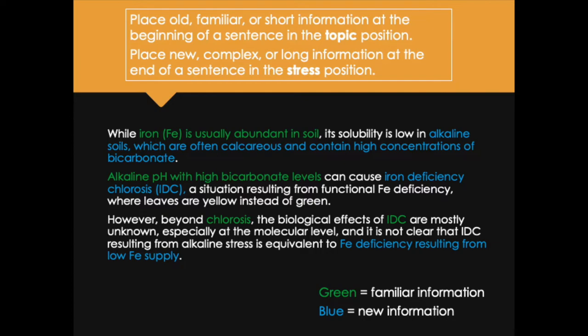The second sentence reads: 'Alkaline pH with high bicarbonate levels can cause iron deficiency chlorosis, a situation resulting from functional iron deficiency where leaves are yellow instead of green.' This introduces the new concept of iron deficiency chlorosis, which then becomes familiar in the third sentence: 'However, beyond chlorosis, the biological effects of IDC are mostly unknown, especially at the molecular level, and it is not clear that IDC resulting from alkaline stress is equivalent to iron deficiency resulting from low iron supply.' This jumping word location technique makes paragraphs cohesive.